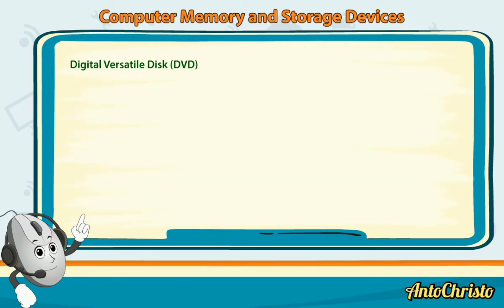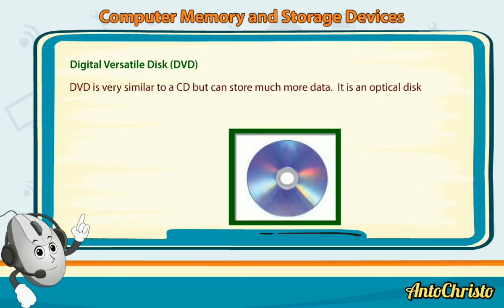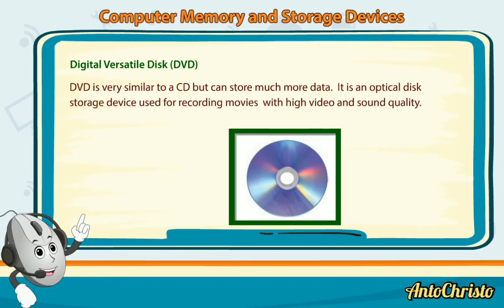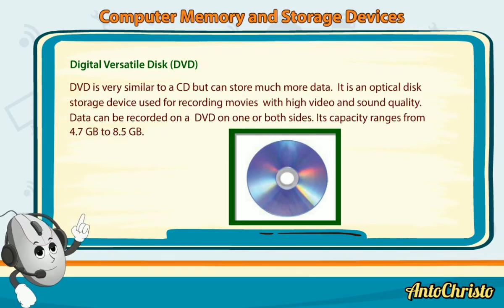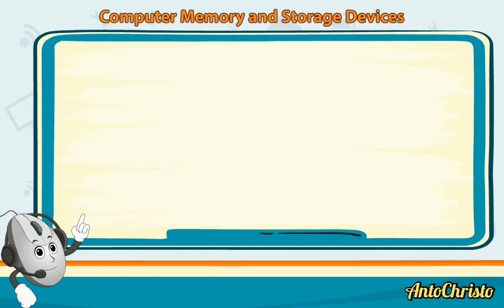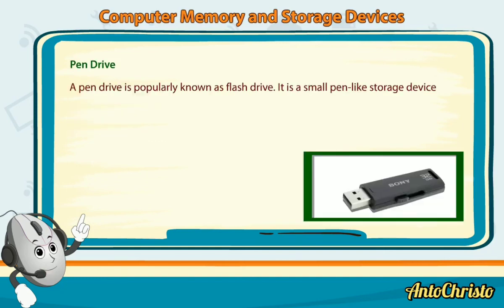Digital Versatile Disk (DVD): A DVD is very similar to a CD but can store much more data. It is an optical disk storage device used for recording movies with high video and sound quality. Data can be recorded on a DVD on one or both sides, and its capacity ranges from 4.7 GB to 8.5 GB.